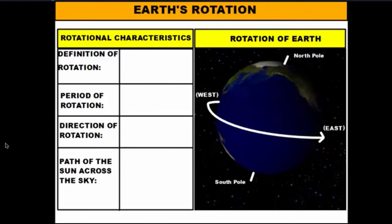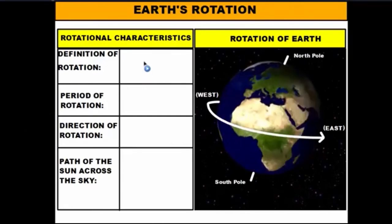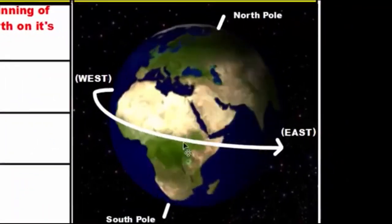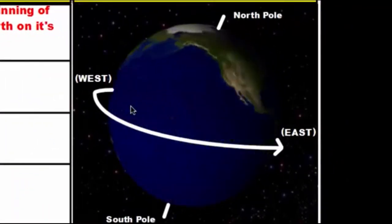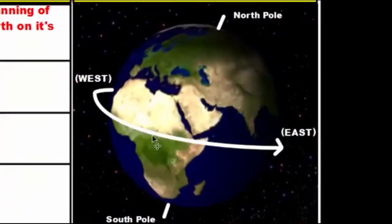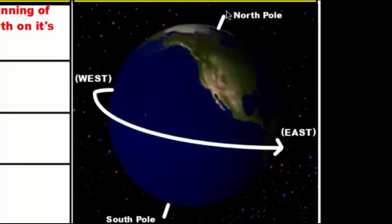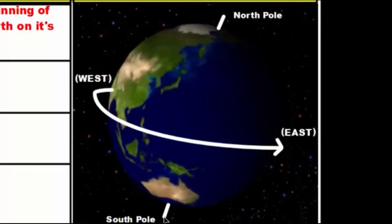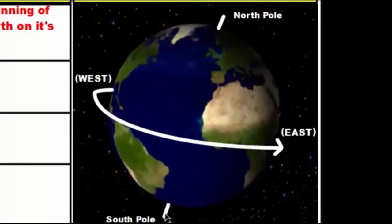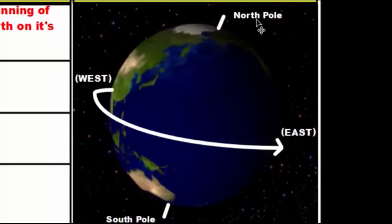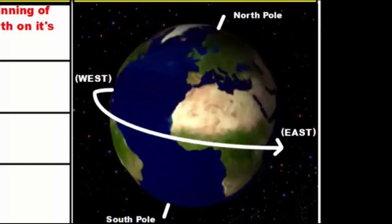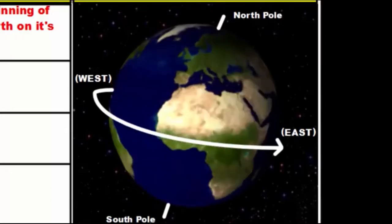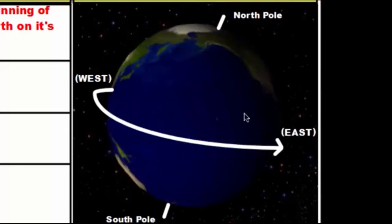The first motion that we're going to talk about is Earth's rotation. Now Earth's rotation is defined simply as the spinning of the Earth on its axis. You can see the rotation of the Earth right here. The Earth is just spinning in place around this imaginary line that runs through the middle of the Earth at a 23.5 degree angle called its axis. We identify the top of the axis with the North Pole and the bottom with the South Pole.